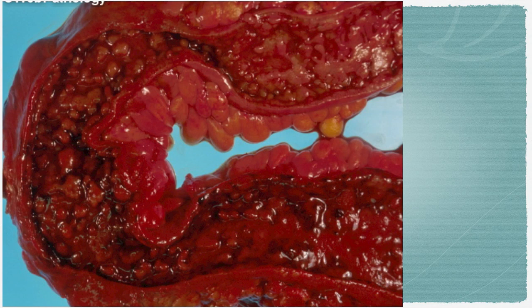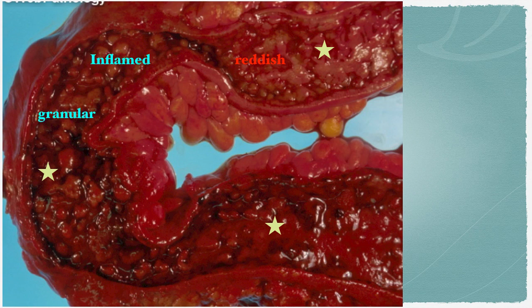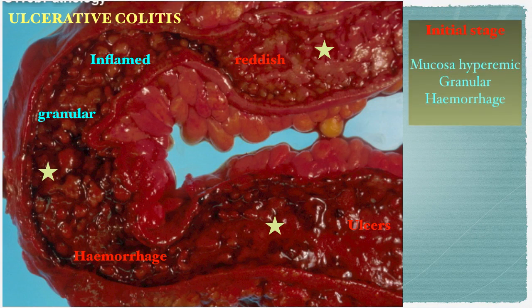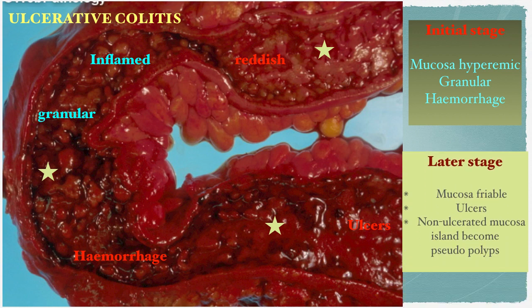This fresh colectomy specimen shows involvement of the whole area. It appears reddish, inflamed, granular, and hemorrhagic with multiple ulcers — these features are consistent with ulcerative colitis. Their morphology depends on the extension of the disease. The initial stage is characterized by hyperemic, granular mucosa and hemorrhage, but the later stage shows much more friable mucosa with pseudopolyp formation.